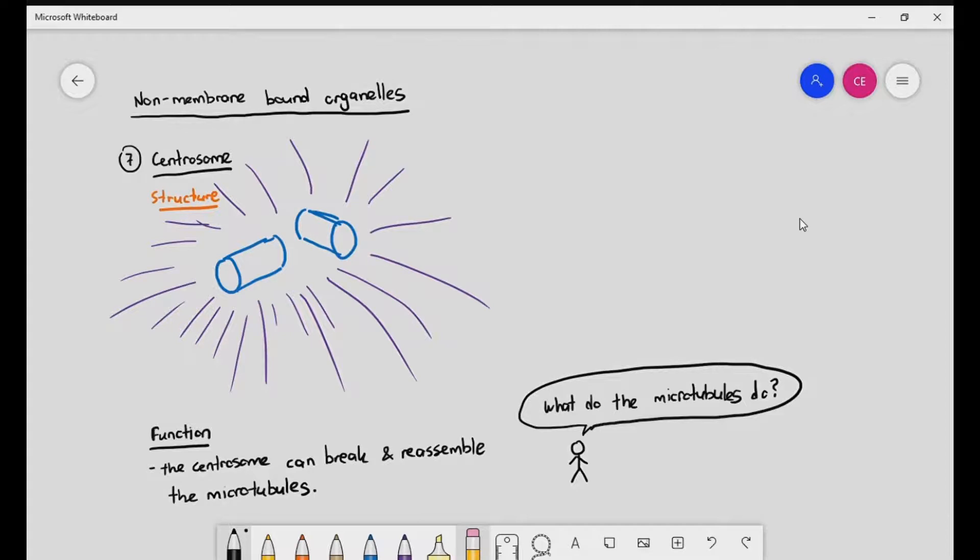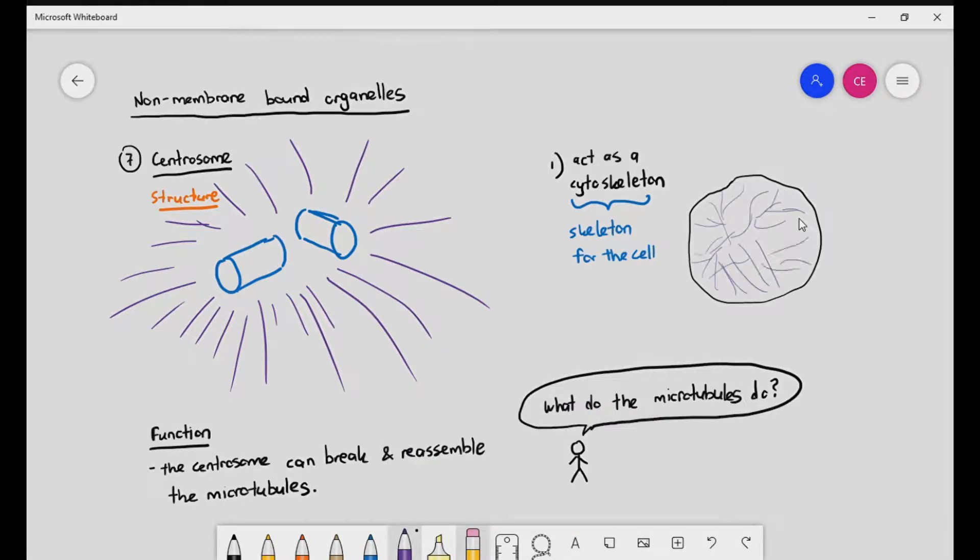Number one, they act as a cytoskeleton. If you imagine the human body, the human body actually needs bones to support itself. Without bones, you'll just basically be a bag of flesh and skin with no shape to your body. To maintain the shape of a cell, for example an animal cell, it will also need to have its own internal support system. And that internal support system is the cytoskeleton.